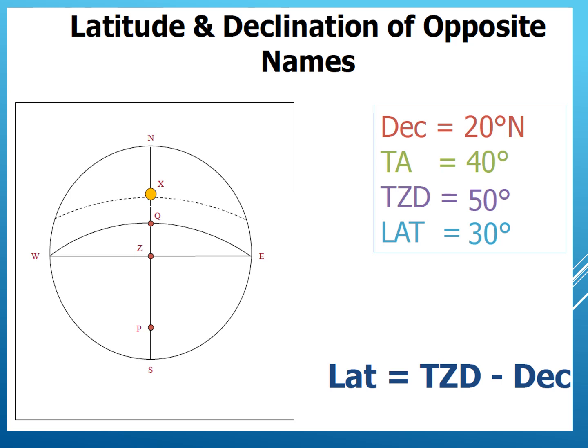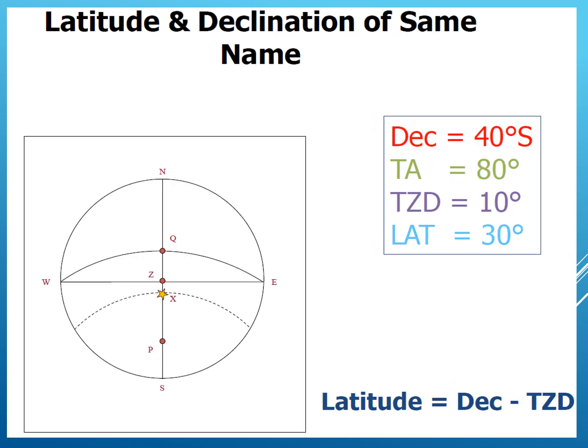In the next case, the declination is south because the celestial body is south of the equinoxial — declination is 40 degrees south. Assume the true zenith distance ZX is 10 degrees. In this case, the latitude ZQ becomes the declination QX minus ZX: 40 minus 10 equals 30 degrees. The latitude is south because the observer is south of the equinoxial.